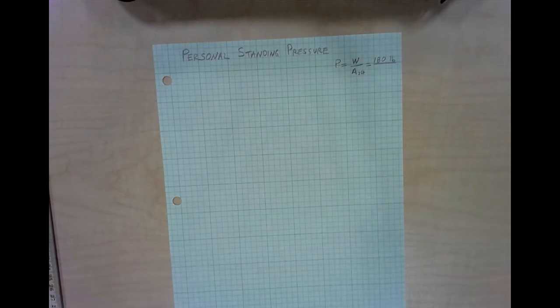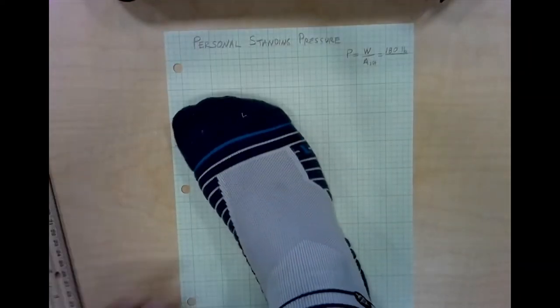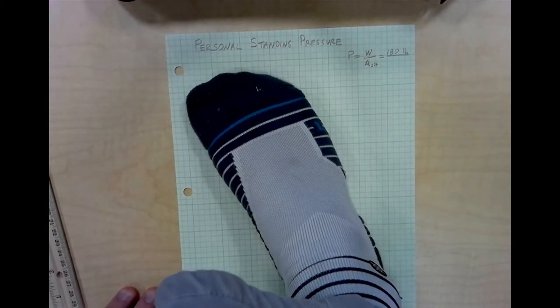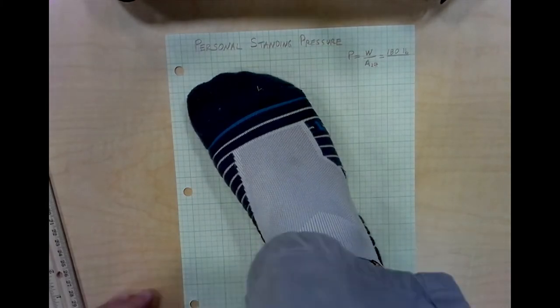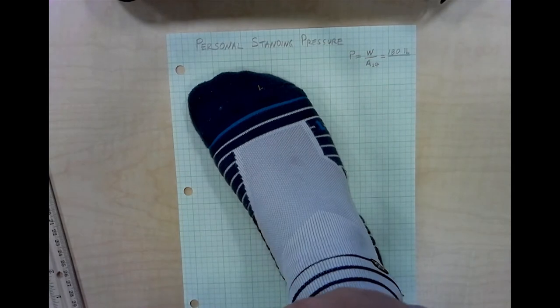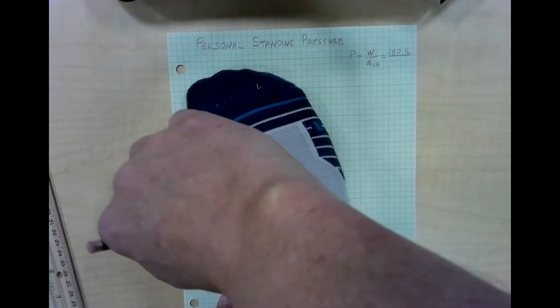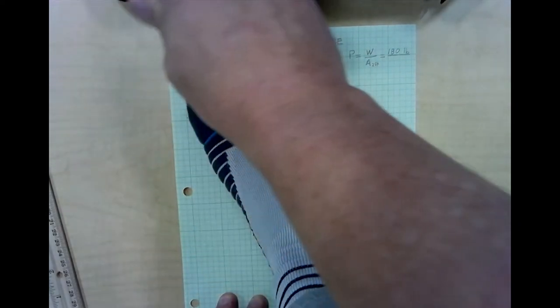To do so I'm going to start by taking my foot and tracing it on the piece of graph paper. I'll orient my foot so it fits on the entire page. Probably have to do so at a bit of an angle depending on the size of your foot. If you have a much larger foot you may need two pages of graph paper. And then I do the best I can to trace my foot where it's contacting the paper.